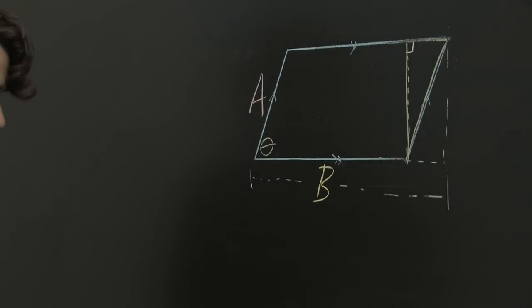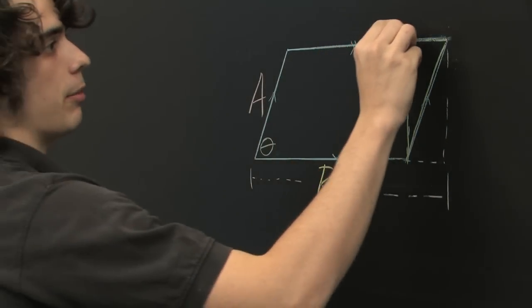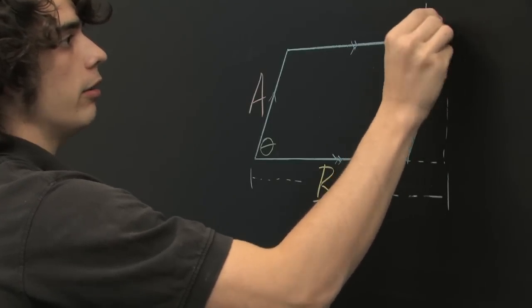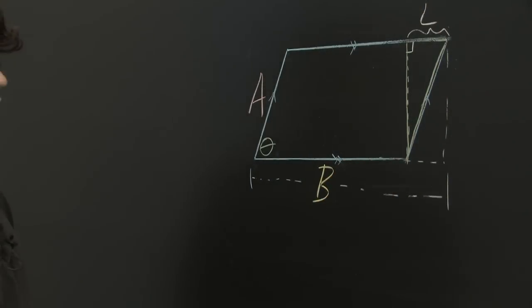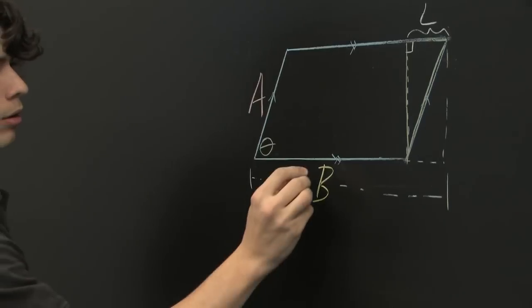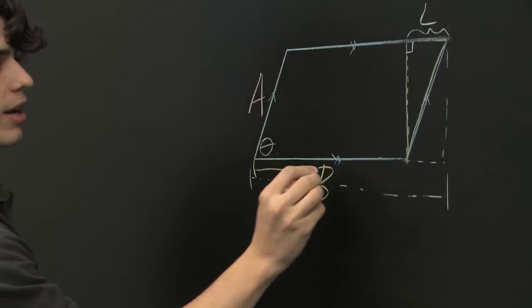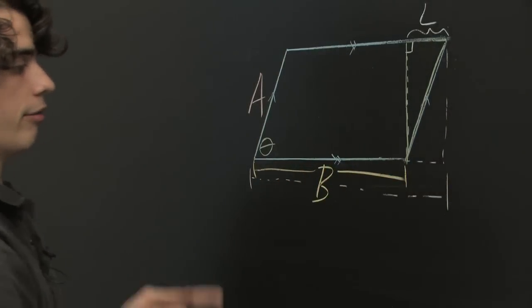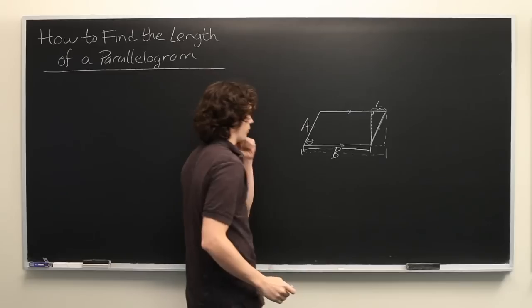If we can determine the length of this segment here, which we'll call l, then we can simply add l to b, and we're good to go. Recall that b is the base of the parallelogram itself, not of the entire area that we're looking for.